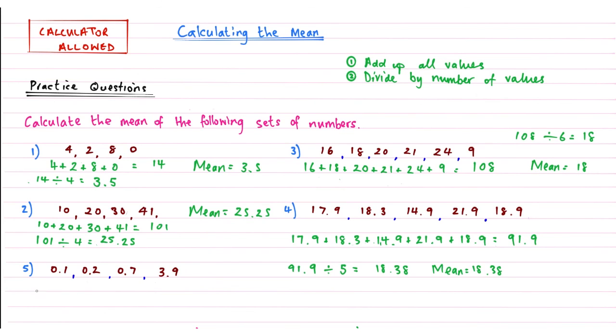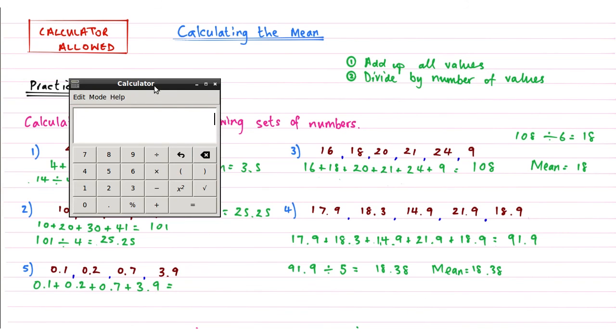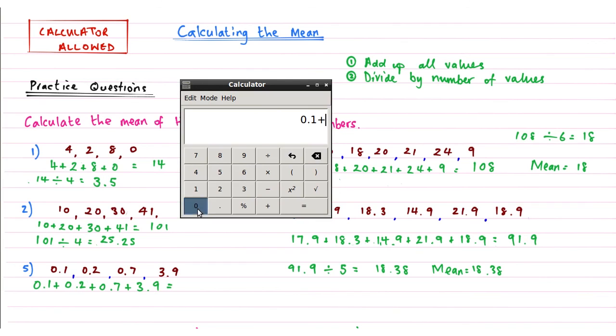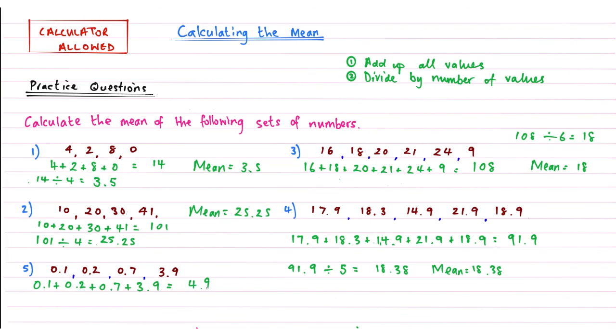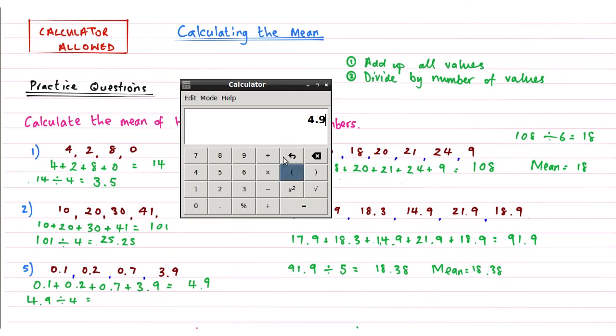And that leaves us with question 5, the last one. So 0.1 add 0.2 add 0.7 add 3.9. So that's step 1, remember, adding up all my values. Calculator, cancel my last answer. 0.1 plus 0.2 plus 0.7 plus 3.9, and that gives me a princely sum of 4.9. And then we're dividing this by 4.